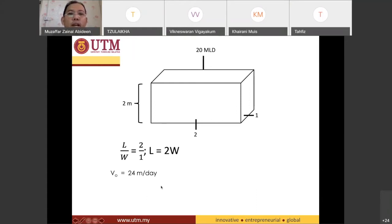2 meters and the overflow rate was also given 24 meter per day. So they want you to find out the t, the L and also the W.